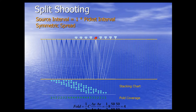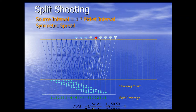We can now calculate the fold. The fold is equal to 1 over 2 times C, where C is delta x over delta g, and delta x over delta s equals 1/2. With 8 channels, a picket interval of 50 meters, and a source-receiver interval of 50 meters and source interval of 50 meters, the maximum fold recorded is 4. The number of times a CDP is hit by a reflection point is called the fold.